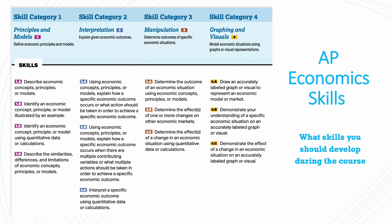The fourth skill category, which is very important, is graphing and visuals — to model economic situations using graphs or visual representations, which entails drawing an accurately labeled graph or visual to represent an economic model or market, demonstrating your understanding of a specific economic situation using an accurately labeled graph or visual, to demonstrate the effect of a change in an economic situation on an accurately labeled graph or visual.